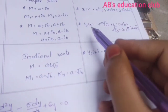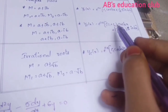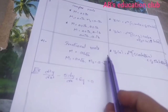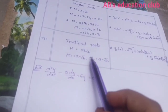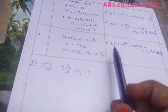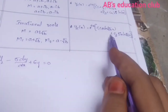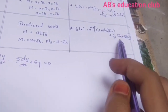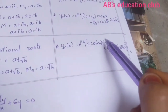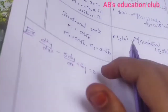For repeated complex roots m = a ± ib occurring twice (four roots total), the complementary function is yc(x) = e^(ax)·[(c1 + c2·x)·cos(bx) + (c3 + c4·x)·sin(bx)]. For irrational roots m = a ± √b, where m1 = a + √b and m2 = a − √b, yc(x) = e^(ax)·[c1·cosh(√b·x) + c2·sinh(√b·x)].